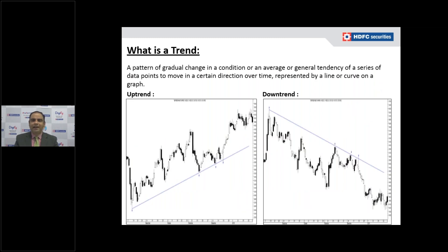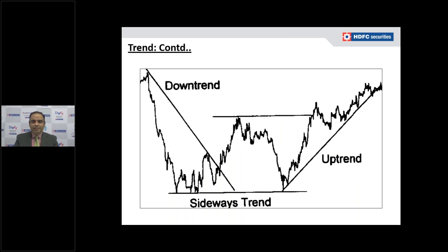After charts, we look at what a trend is. We know what is an uptrend and what is a downtrend and how to identify them. A trend is the pattern of gradual change in conditions — the general tendency of data points to move in a certain direction. Using support lines and resistance lines you can identify downtrend, sideways trend, and uptrend. Downtrend means the stock price is continuously moving down; uptrend means the vice versa; sideways trend means moving in a range.